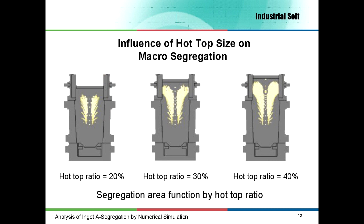In the next three slides I analyzed the influence of hot top size, initial mold temperature and pouring temperature on A-segregation. To analyze the influence of hot top size, I made simulations with hot top ratio of 20%, 30% and 40%. As you can see, the area affected by A-segregation is lower if the hot top size is small. So to minimize the A-segregation in a 50-ton ingot, a small hot top is recommended.